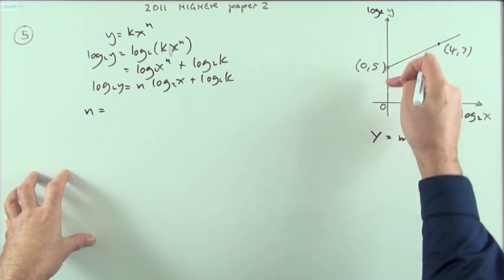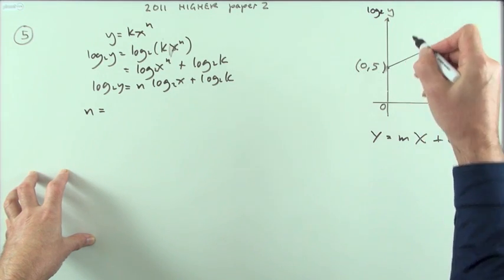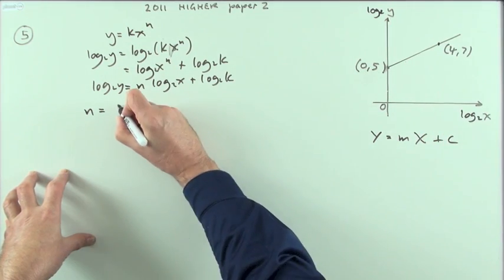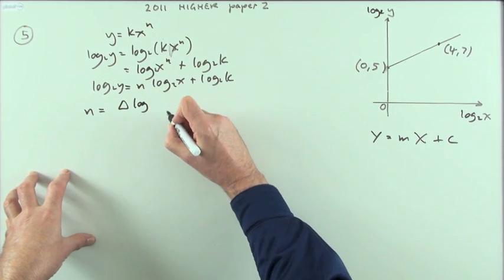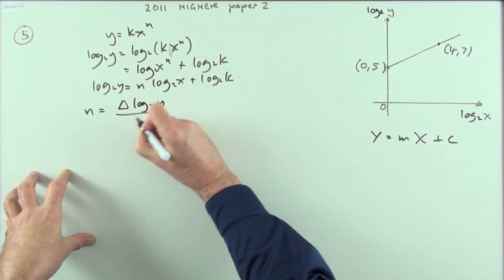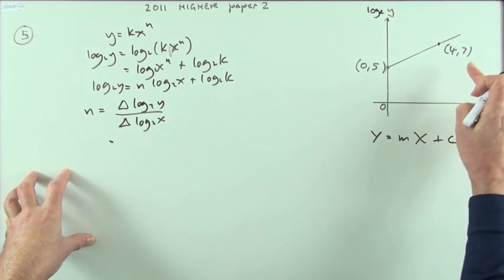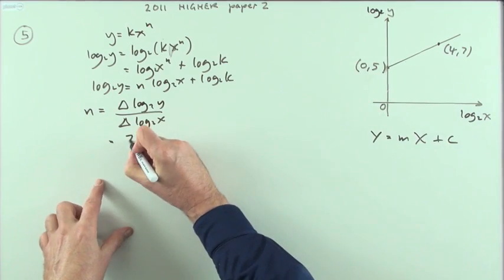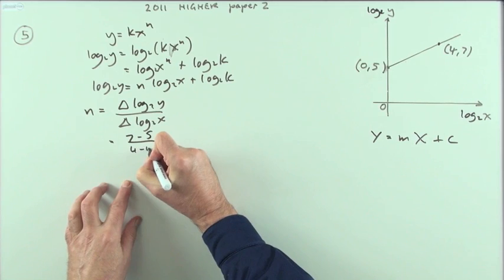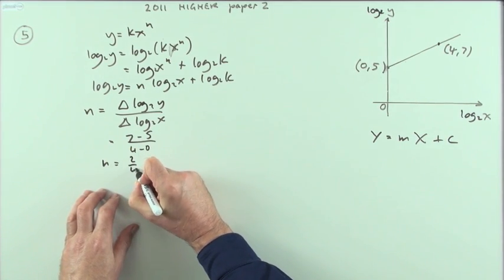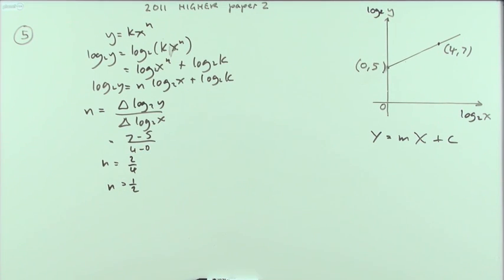So that's the difference in the verticals. Now I'm not going to say y2 minus y1. It'd have to be log 2y2 minus log 2y1. Well, that's a bit cumbersome. I'll just put delta for the difference. That's a much more satisfactory symbol. Log 2y over the difference in the x's. Log 2x. So it's going to be 7, take away 5, over 4, take away 0. And that gives you 2 over 4, which means n equals a half. And that was nice and easy.